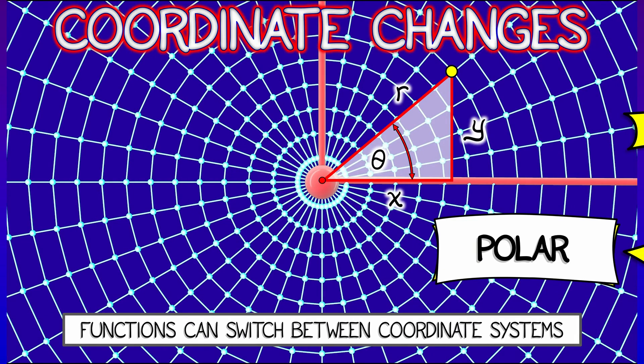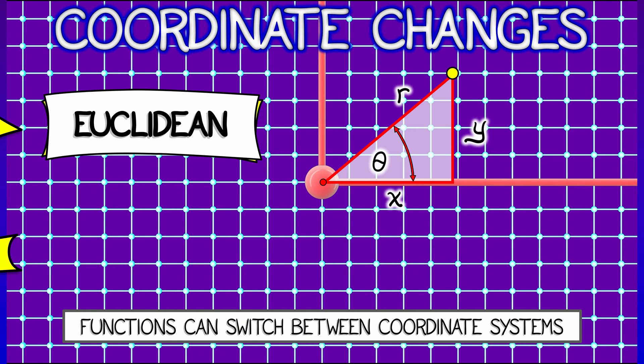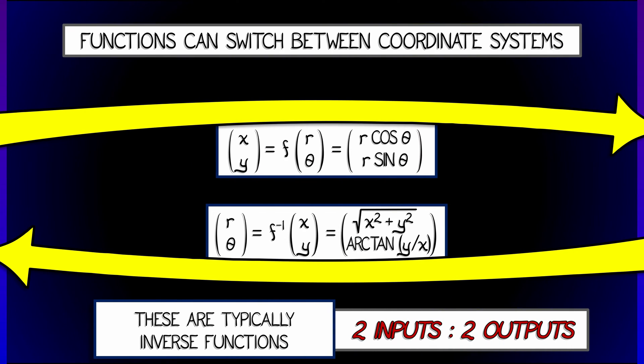Remember our old friend polar coordinates? R and theta—you're in the plane. You can convert from that to Euclidean coordinates, to x and y, and you do so through a multivariate function.